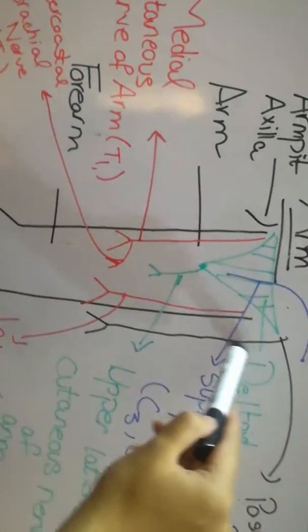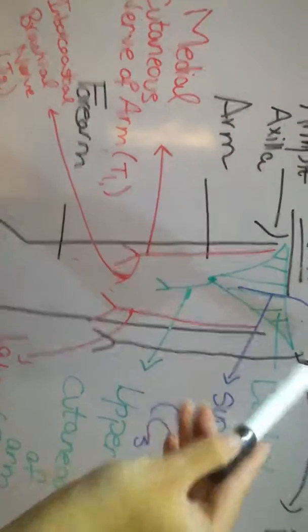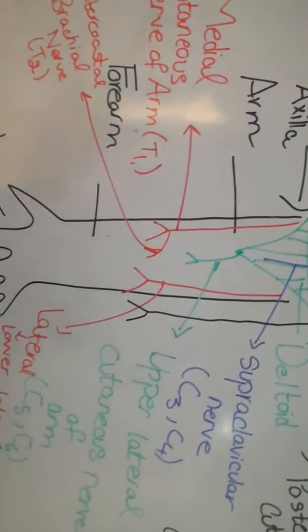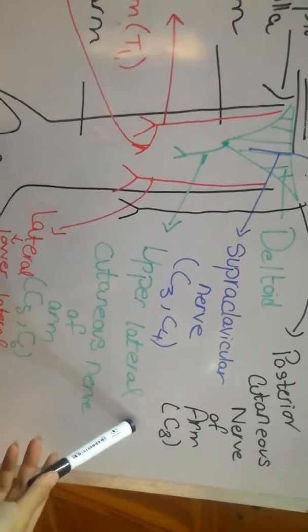Then the nerve shown with the black color marker is present on the back of the arm, so it is on the posterior side. The nerve which is supplying the posterior side of the arm, the triceps muscle, is the posterior cutaneous nerve of the arm having nerve root C8.